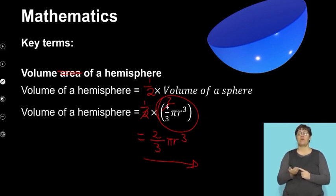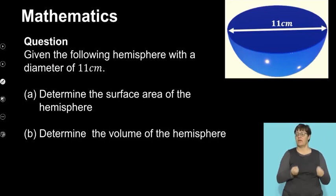I'm quickly going to show you an example of how this can apply. If we are given the following hemisphere with a diameter of 11 centimeters, we can determine the surface area of the hemisphere and we can determine the volume of the hemisphere.